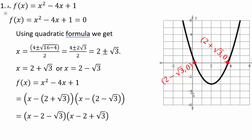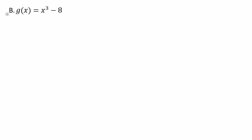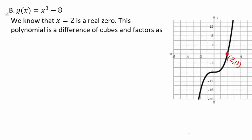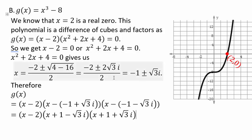For x cubed minus 8 equals 0, we know 2 is one root and use the difference of cubes to factor. The second part is a quadratic, giving x equals negative 1 plus or minus square root 3 times i. So the factors are x minus 2, times x minus negative 1 plus square root 3i, times x minus negative 1 minus square root 3i, which simplifies to x minus 2, times x plus 1 minus square root 3i, times x plus 1 plus square root 3i.